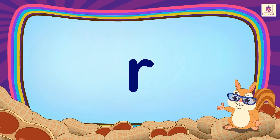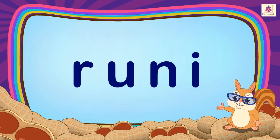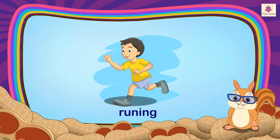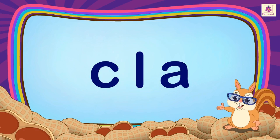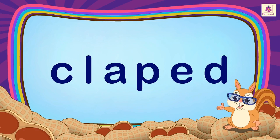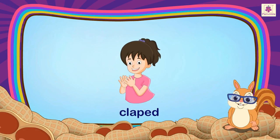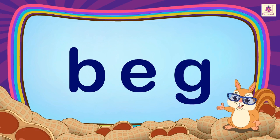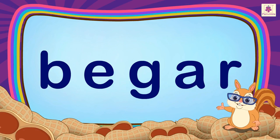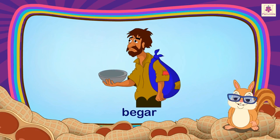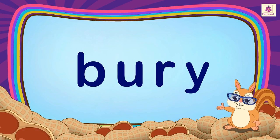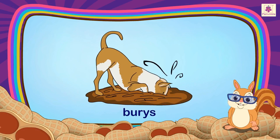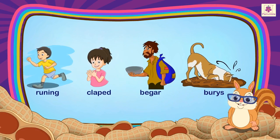R-U-N-I-N-G: Running. C-L-A-P-E-D: Clapped. B-E-G-A-R: Beggar. B-U-R-Y-S: Burries. She has spelled all of them incorrectly.